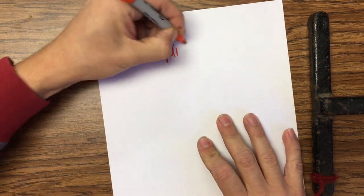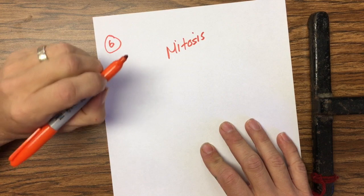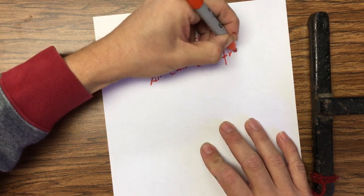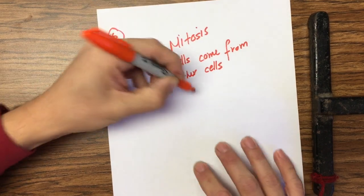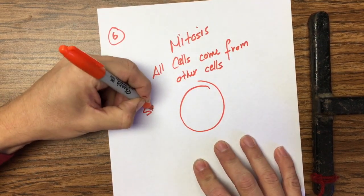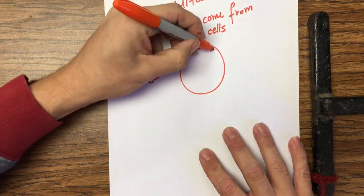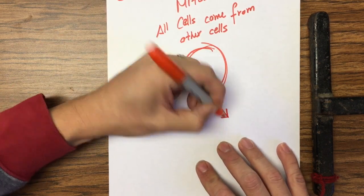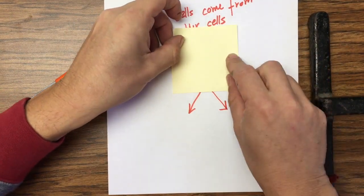Question number six: mitosis. What is mitosis? Remember from cell theory, all cells come from other or existing cells. Let's imagine this post-it is a skin cell. What needs to happen in order for us to make more skin cells?